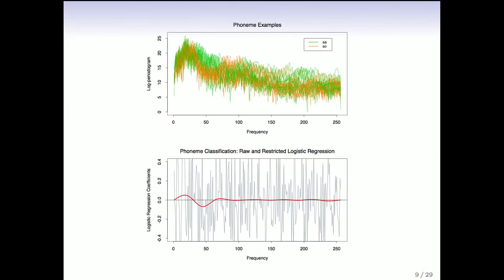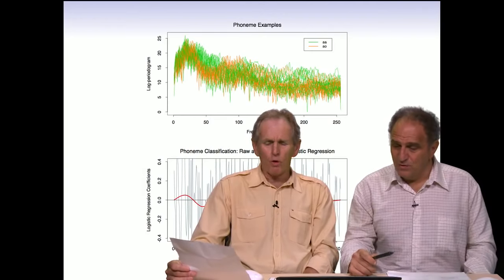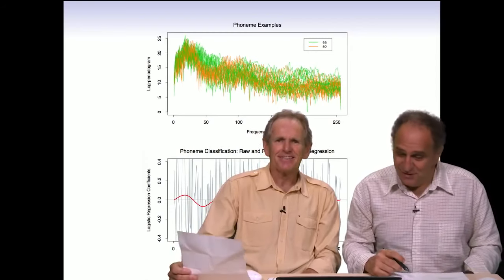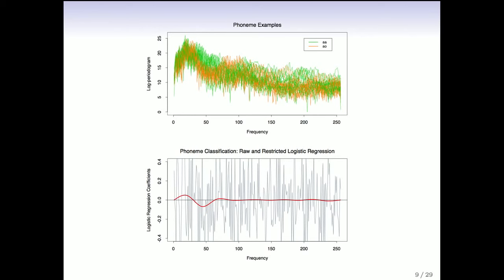The next example is phonemes for two vowel sounds. This graph shows the log periodograms for two different phonemes — AA ('odd') and AO ('ought') — showing the power at different frequencies for sounds spoken by different people (orange and green). The goal is to classify the two vowel sounds based on power at different frequencies. A logistic regression model has been fit to classify the two classes from each other based on the log periodogram, and we'll cover it in detail in the course.